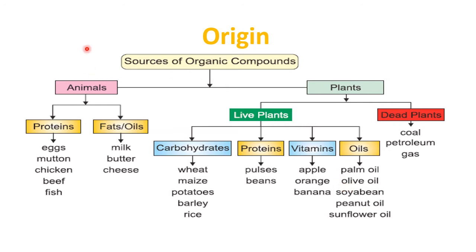So these are our food items from where we can get carbohydrates, proteins, vitamins and many other hydrocarbons or organic compounds.